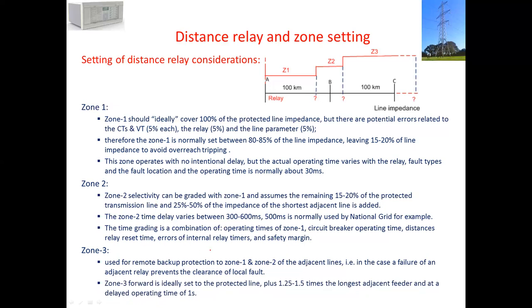Zone 3 is used for backup protection, but it's provided at an operation after delay time or longer time. Ideally we expect the fault to be covered by zone 1 or zone 2, but if not, zone 3 will provide the backup. The zone 3 setting is 100% of the protected line plus the next line plus 25% to 50% of the third line, or 125 to 150 times the longest adjacent feeder.